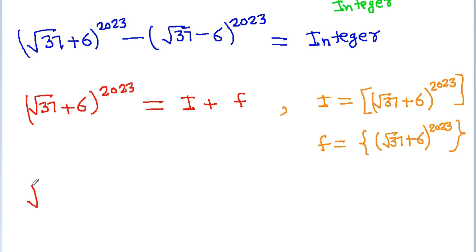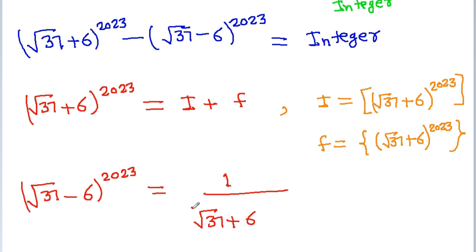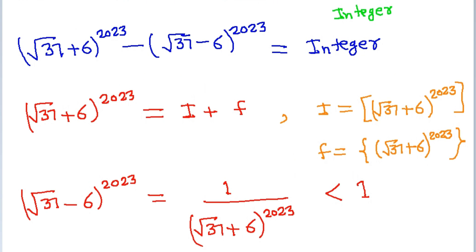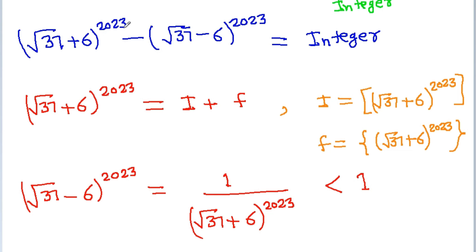We can write (√37 - 6)^2023 = 1 / (√37 + 6)^2023, and since (√37 + 6)^2023 is greater than 1, this value must be less than 1. So the integral part of (√37 - 6)^2023 is 0, meaning (√37 - 6)^2023 is purely a fraction. Let us call it f'.